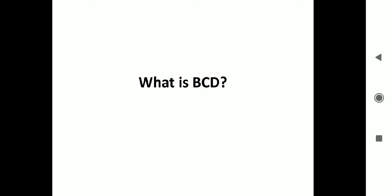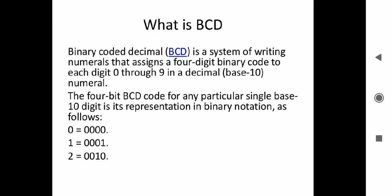We shall move to the next one, that is computer codes, out of which BCD is one, ASCII is another. There are so many different codes. One is BCD, which is called binary coded decimal, which is a system of writing numerals that assigns a 4-digit binary code to each digit, 0 through 9 in a decimal, means base 10.